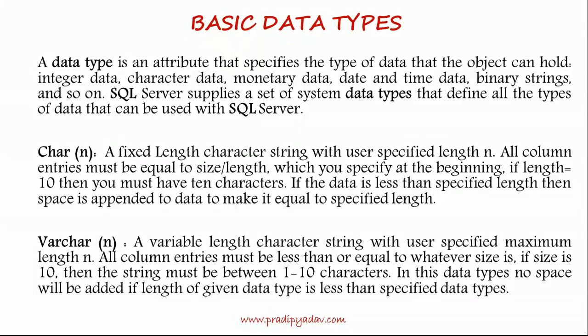For example, if we have a column, we need to define its data type — what type of object it can hold. It could be a character, an integer, or a date type. First, CHAR(n) — where n represents the length and size. This is a fixed-length character string with a user-specified length n. If the size is 5, it will not accept more than 5 characters because the capacity is 5.